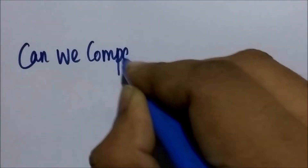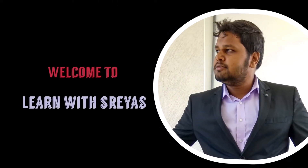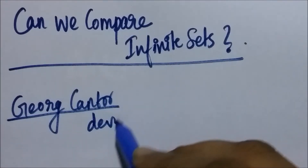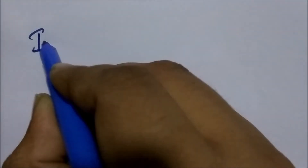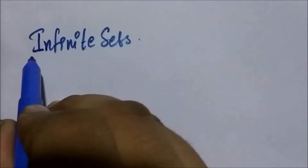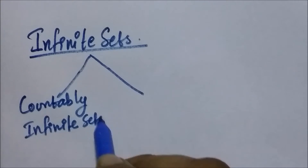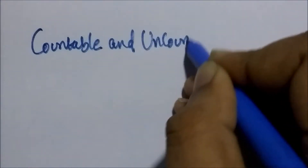Can we compare infinite sets? That's what we are going to see today. Famous mathematician George Cantor developed a method for measuring the size or cardinality of infinite sets. We can categorize infinite sets into two categories: countably infinite sets and uncountably infinite sets. So we have the notion of a countable set and an uncountable set.